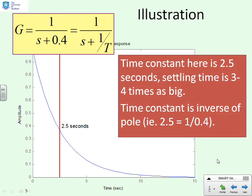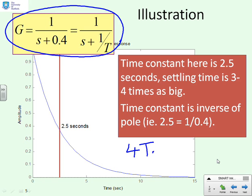Here's the example we're going to use then. You'll notice we've taken g to be a very simple example, 1 over s plus 0.4. Or I can write that in a sort of time constant form, 1 over s plus 1 over T. Now we've shown the free response here and shown how fast the system responds. And you'll notice that it takes roughly 4T seconds to settle.